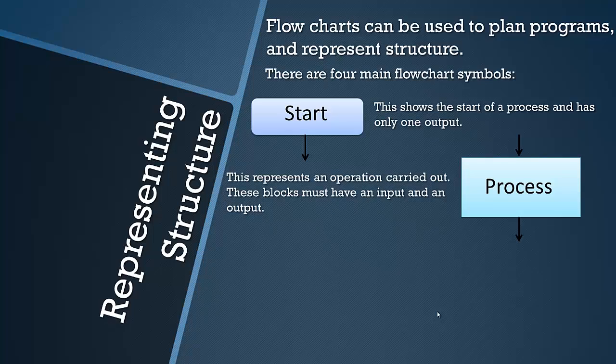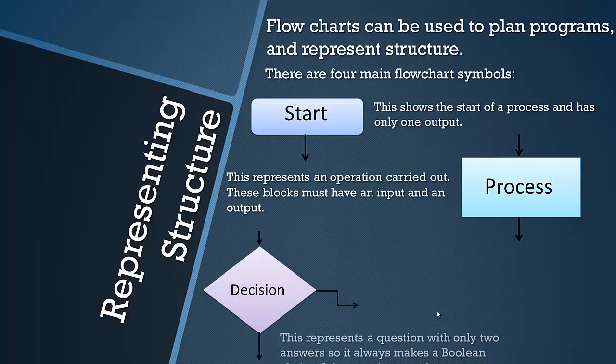Then you have a process block and this represents an operation carried out by the program. These blocks must have an input and output. Obviously this is very general so you can make this as detailed as you want and you may want to fill in what you're doing so it's obvious. This process can mean literally anything but this flowchart is designed to be as simple as possible ideally.